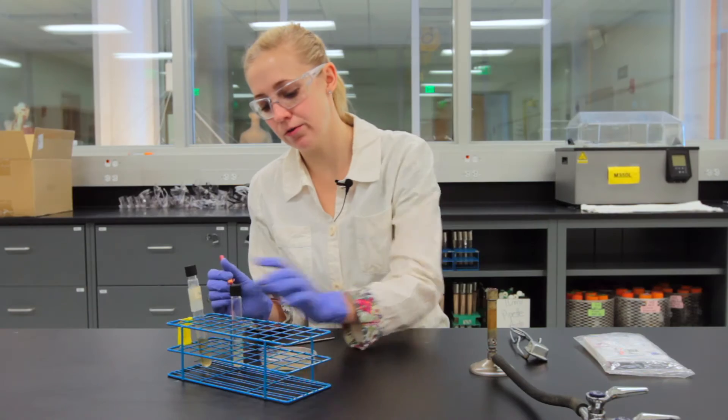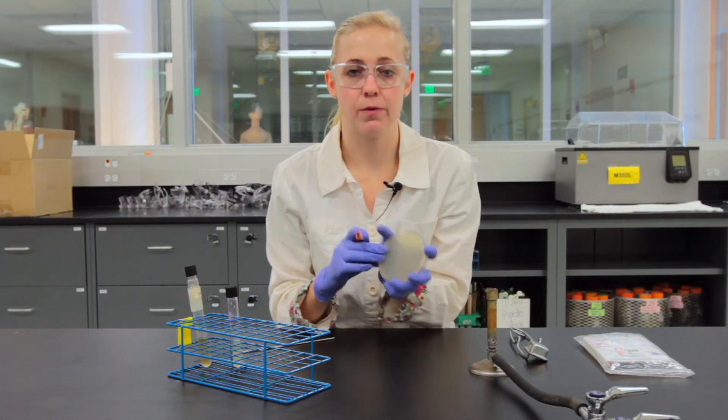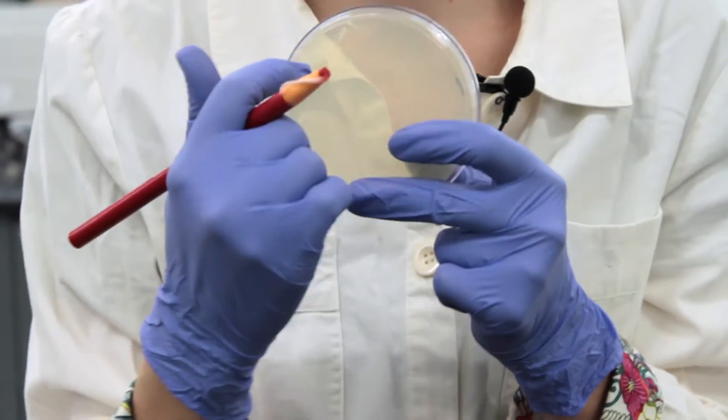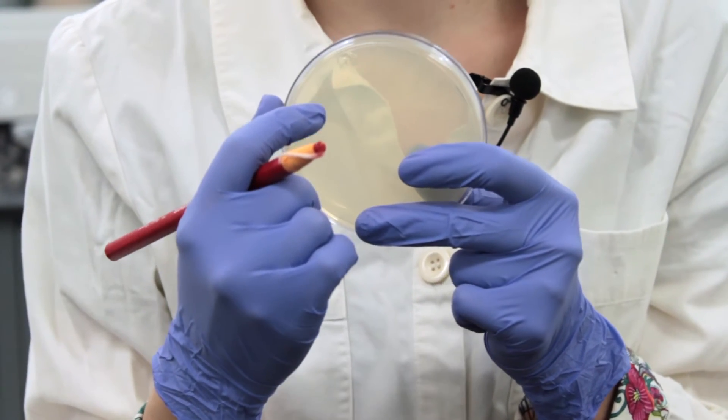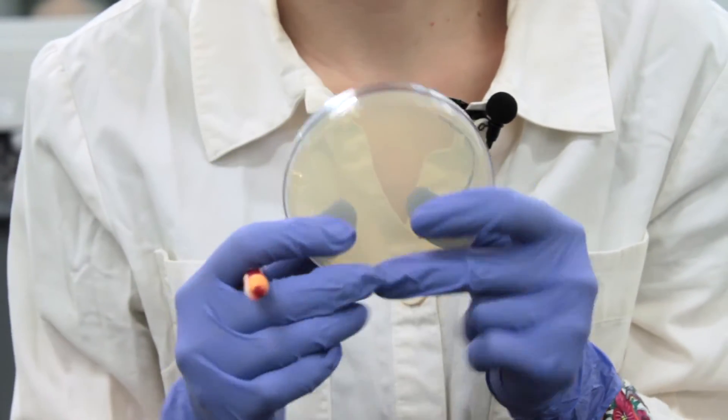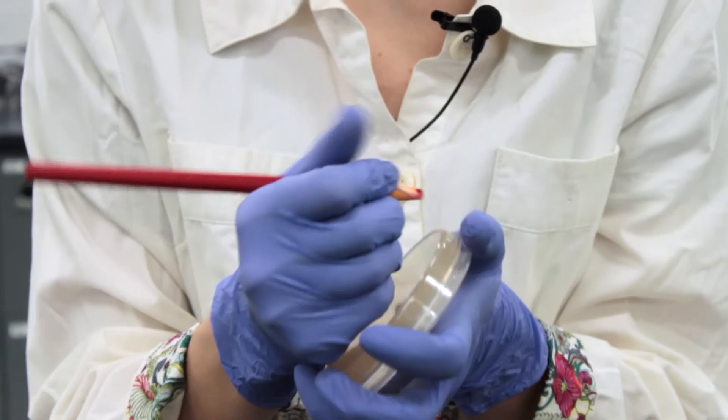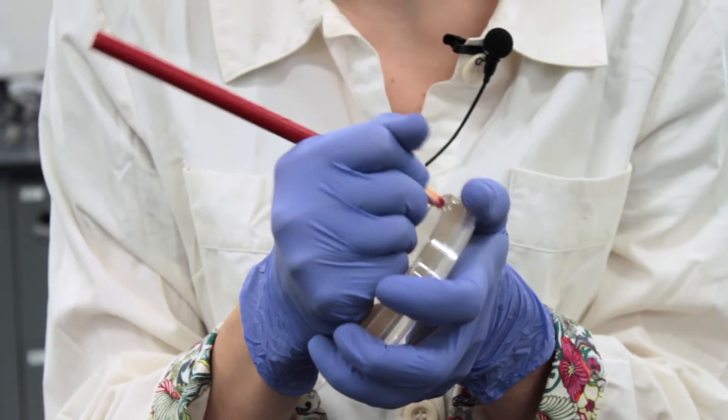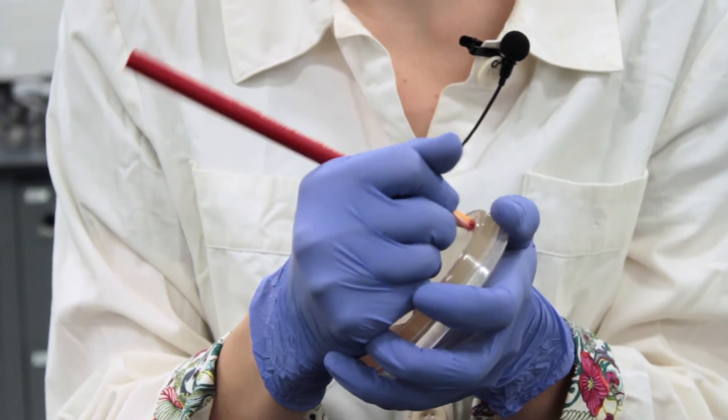I will also write on my nutrient agar plate but I want to make sure that I write in the top upper corner of the plate so that way I can see the bacteria growing in about a week. So I'll include Pseudomonas fluorescens so PF, my initials EK, and the date.